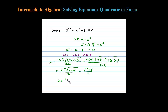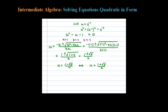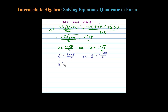That gives us 1 plus or minus the square root of 5, all over 2. So we have two solutions for u: u equals 1 minus the square root of 5 over 2, or u equals 1 plus the square root of 5 over 2. But we're solving for x. Remembering that x to the negative 1 equals u, and x to the negative 1 is the same as 1 over x, we write: 1 over x equals 1 minus √5 over 2, or 1 over x equals 1 plus √5 over 2.